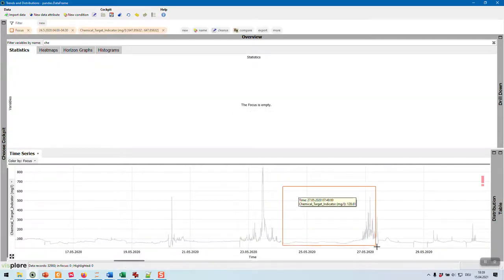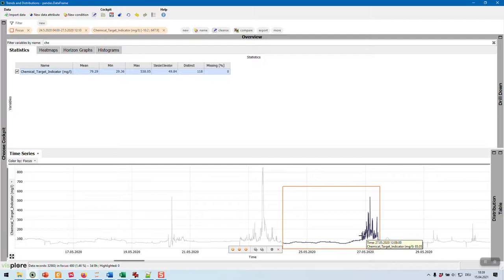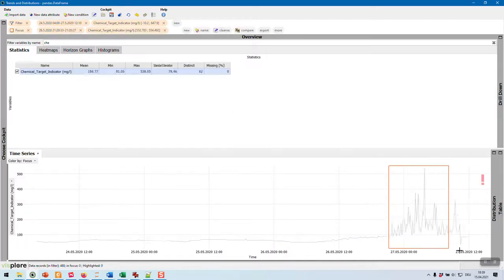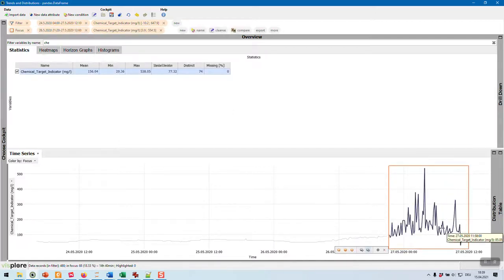So the process engineers now could wonder what other sensors could have led to this anomaly. What could be the root cause? And for analyzing this, we can now pick just a certain part of the data, a certain time period, select this anomaly and compare this anomaly to the time before.